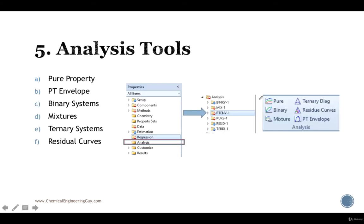Then we go to one of the most interesting parts of the course, which is the analysis tools. They are the pure properties, binary, mixture, PT envelope which is very useful for dew and bubble points calculations, ternary diagrams and residual curves. Essentially, I like to separate this as either pure, binary system, or ternary system, or plus systems. Depends on the number of substances you use, you will be enabling these little buttons right here.